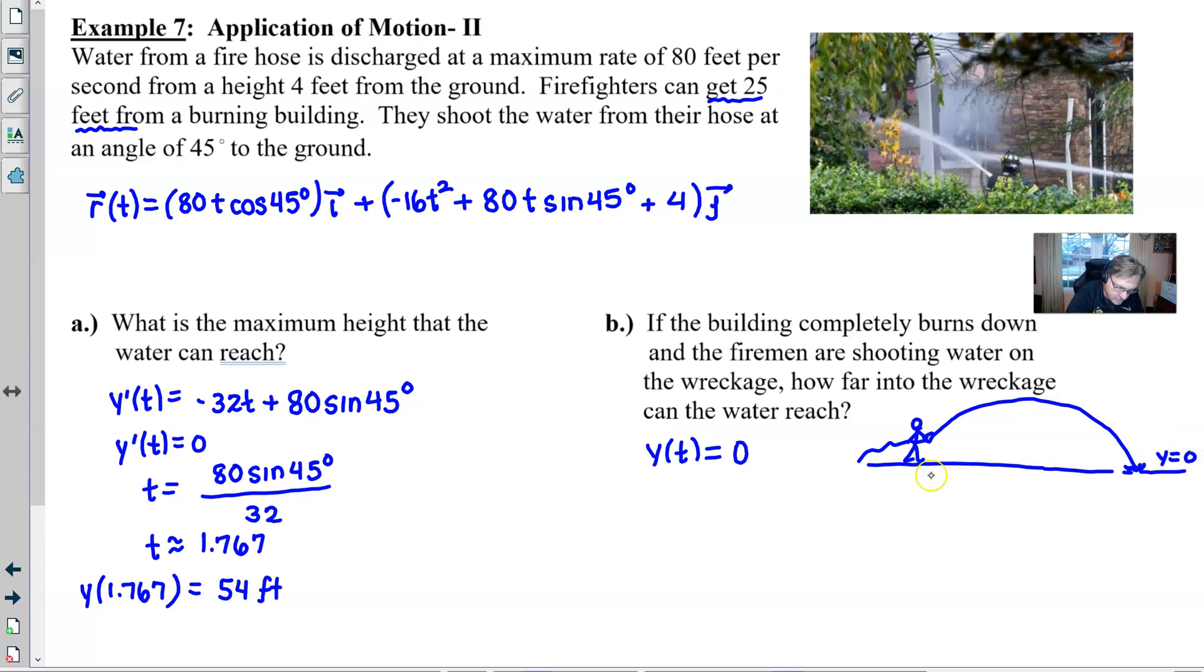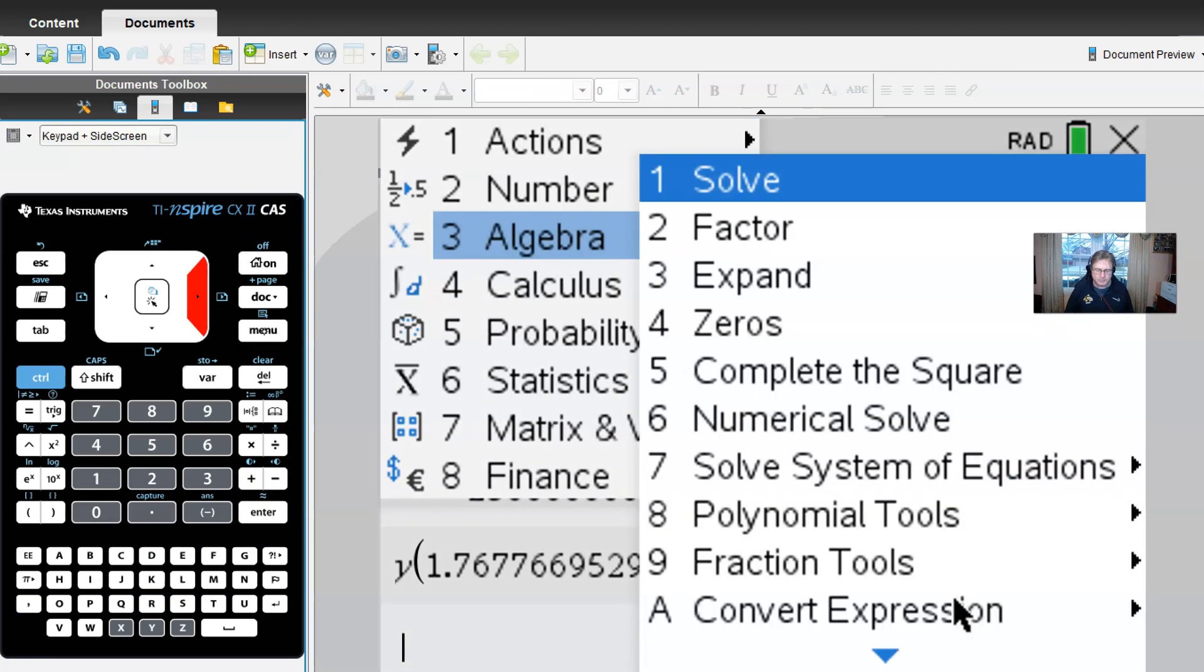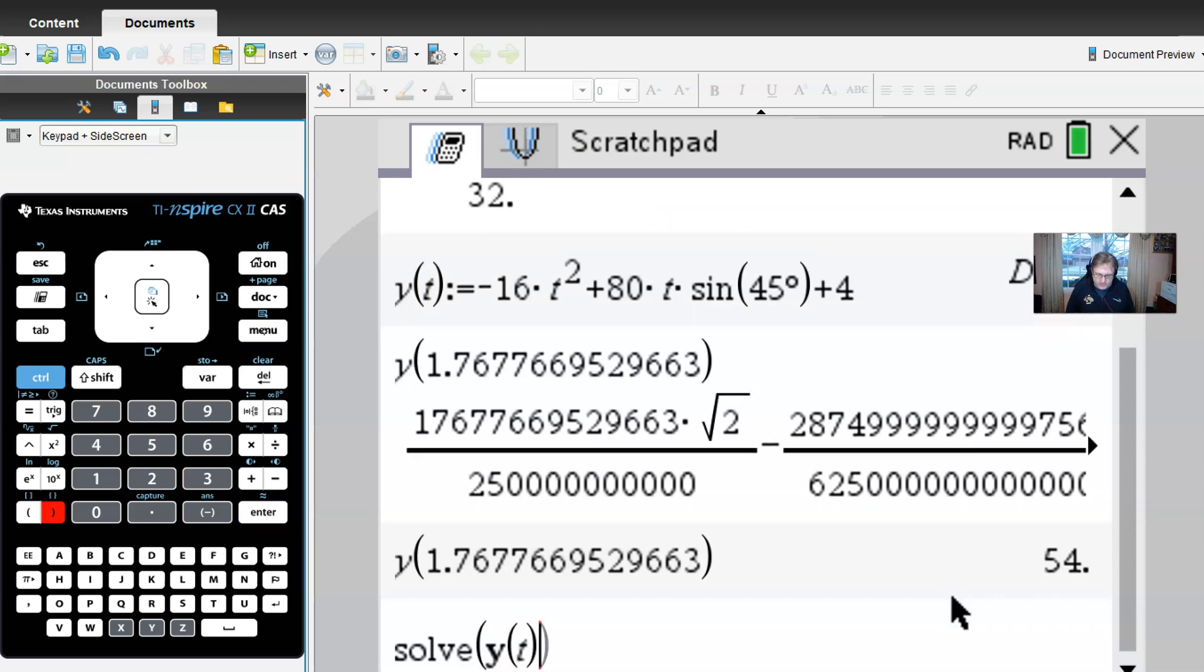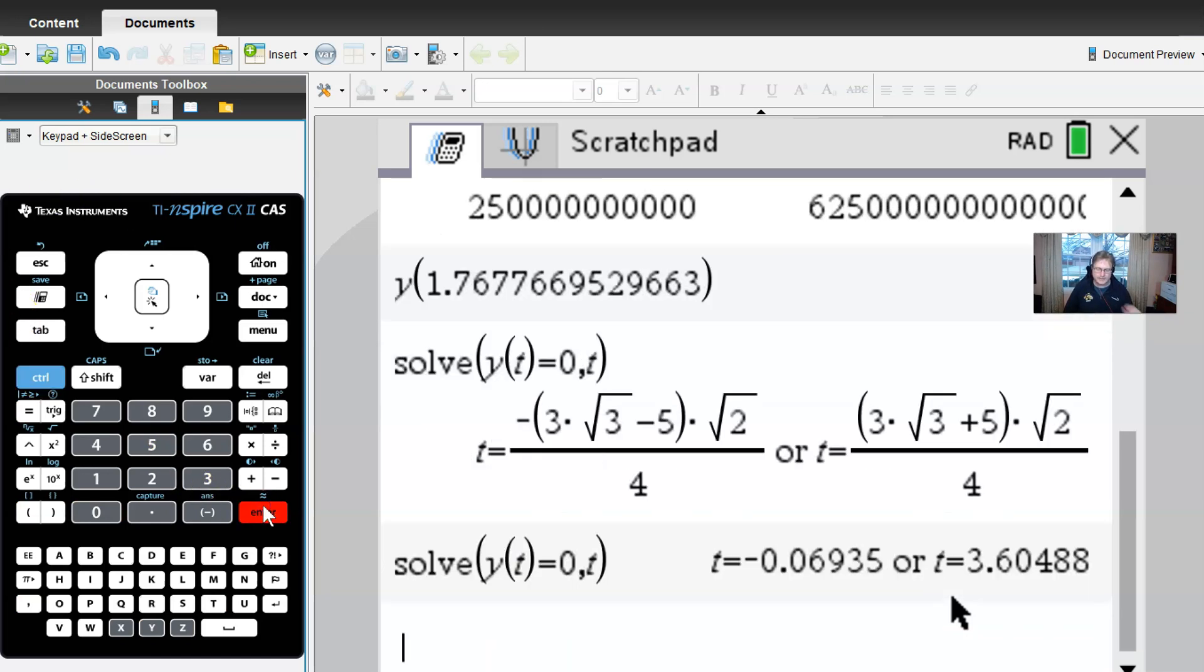However, we do not know what this X value is. And that's what the whole problem is about. We want to find what that is. So we're going to set Y of T equal to zero. And as I said before, it's probably a good idea that we had our Y defined, because we can just move right into our algebra solve, take our Y of T equation, set it equal to zero comma T. It's probably going to give us some ugliness. So we'll hit control enter to get some prettiness. And we find out that there are two answers, but only one of them really makes sense, the 3.6048.